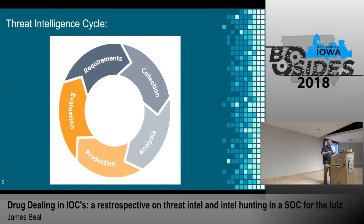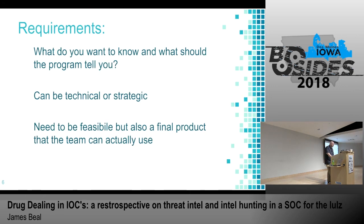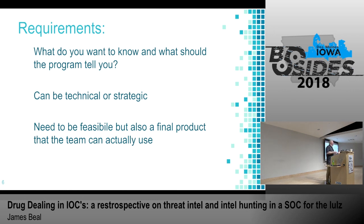This is the threat intelligence cycle that MWR uses in their paper. The requirement stage is first — you really want to define what you're looking for and what you want the program to tell you. Don't go out and pay an expensive vendor for threat intelligence if you don't know what you're going to use it for. One of the best ways is to just narrow down and pick a subject to start with — whether it's PowerShell behavior or file hash comparisons, based on the tools you have.